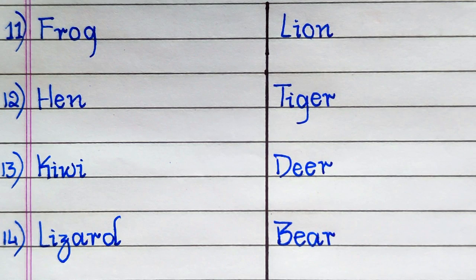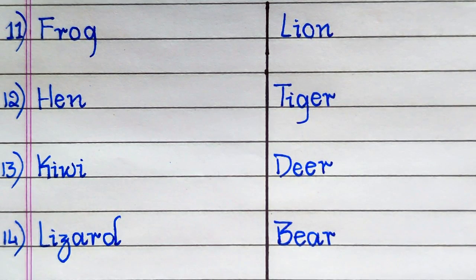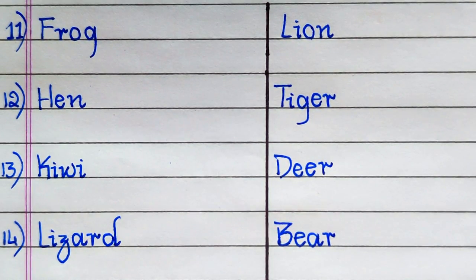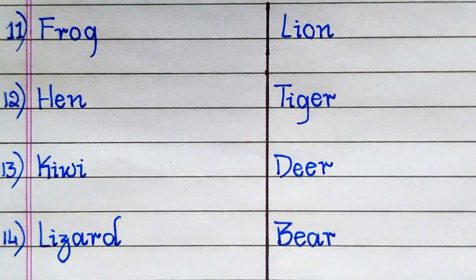The name of the 11th oviparous animal is Frog, 12th Hen, 13th Kiwi, 14th Lizard. The name of the 11th viviparous animal is Lion, 12th Tiger, 13th Deer, 14th Bear.